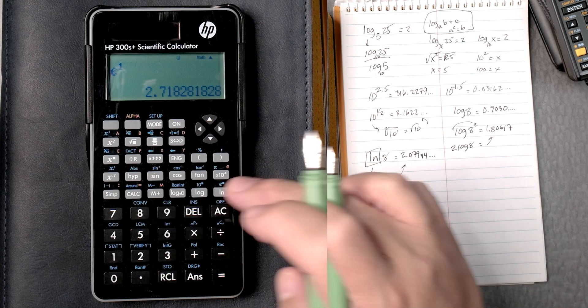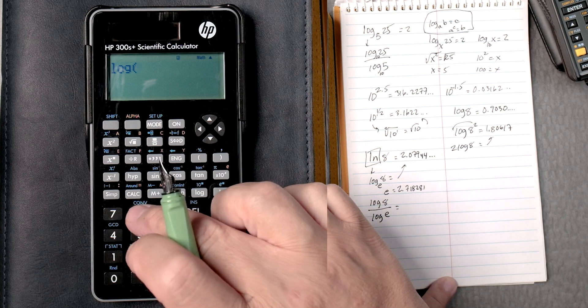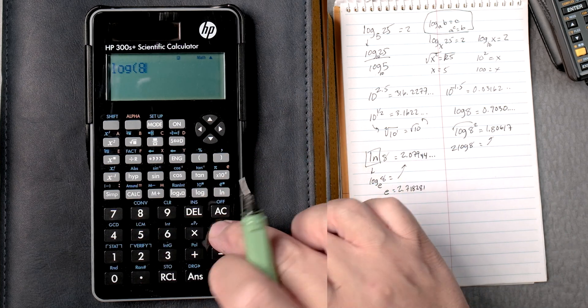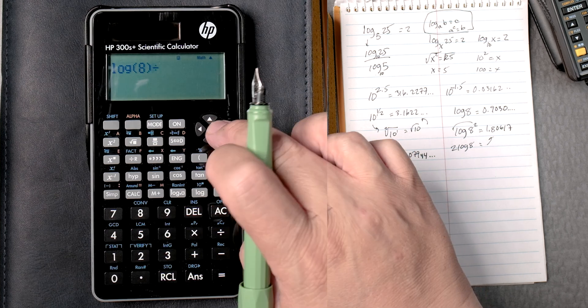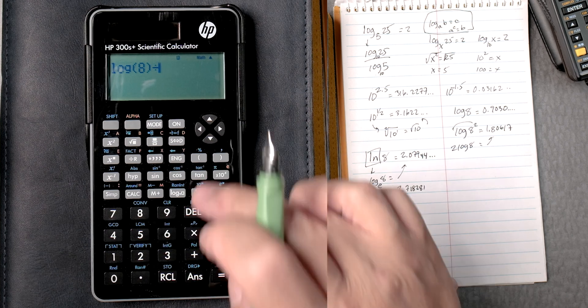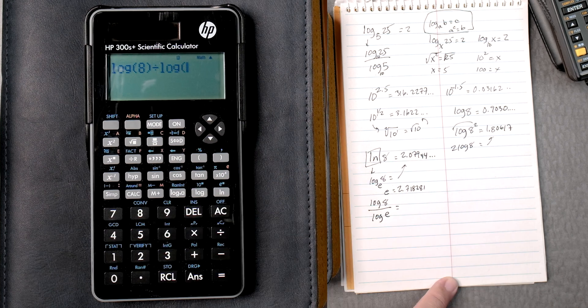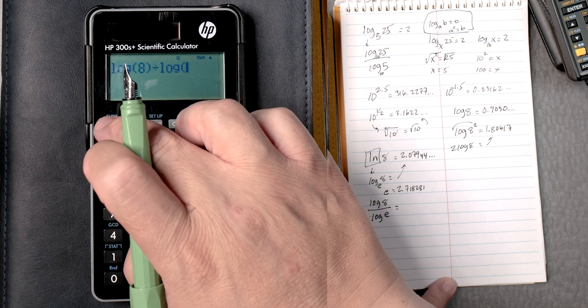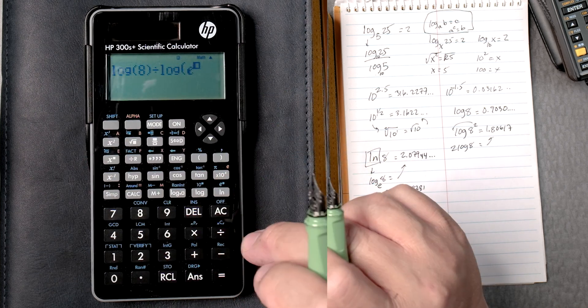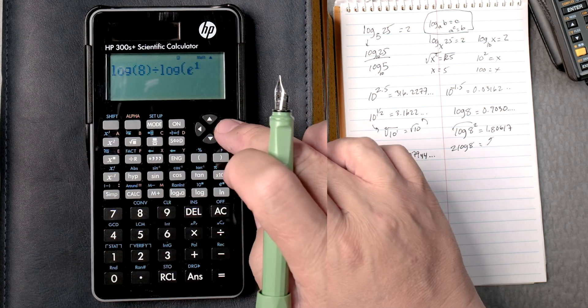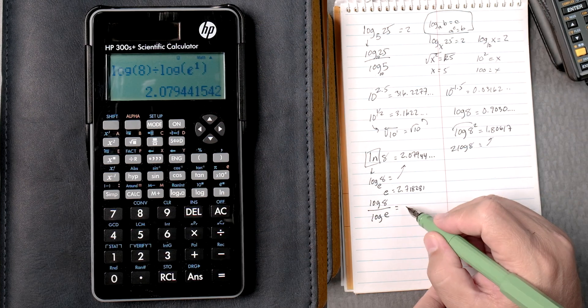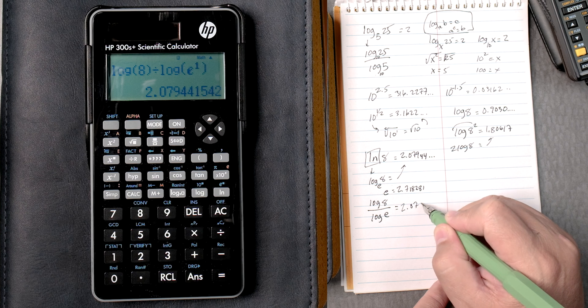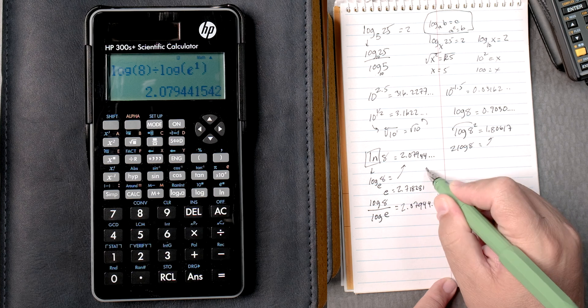So we're going to do the log of base 10, and then 8, we close it, divide it. Let's make sure we close it. Divided by, log, and then we're going to do e. How do we do that? Shift, natural log key, we put a 1, we move it over, and then we close it, equals, and you can see it's 2.07944, this answer.